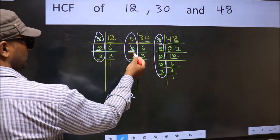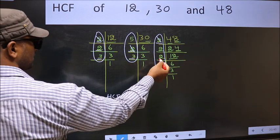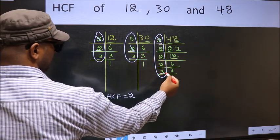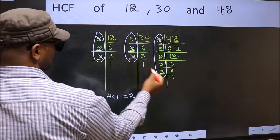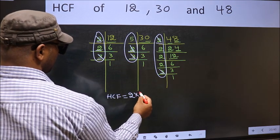Next number 3. Do we have 3 here? Yes. Go to the next place. Do we have 3 here? Yes. So, cut 3 right here.